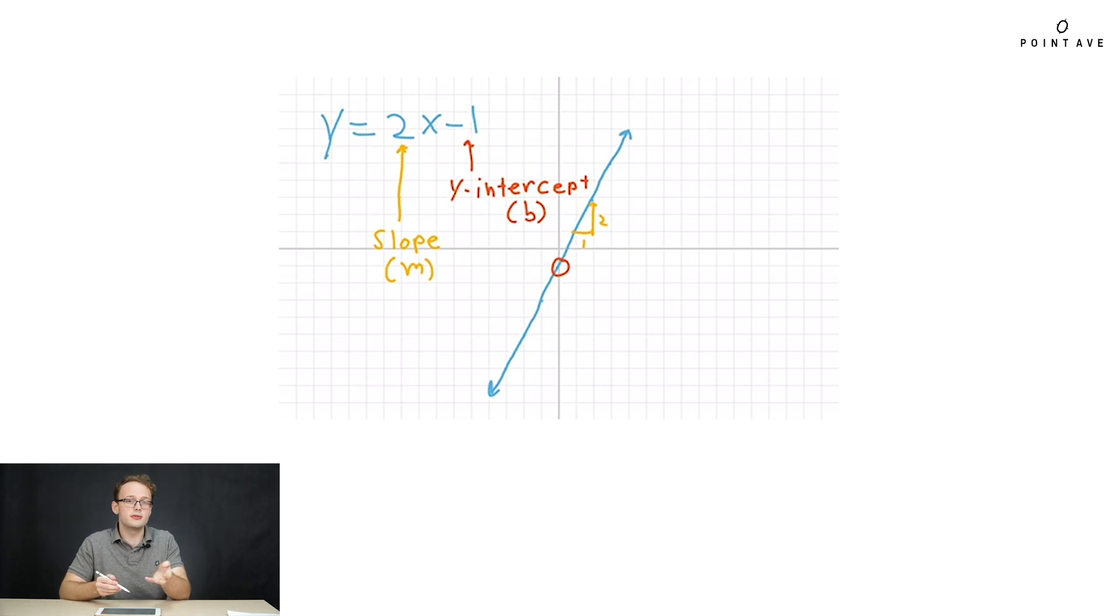In this case, it's 2, so we see visually that when x moves to the right 1, y increases or moves up by 2.